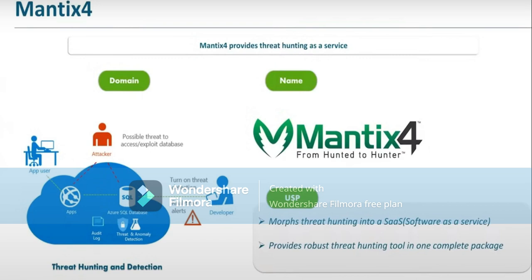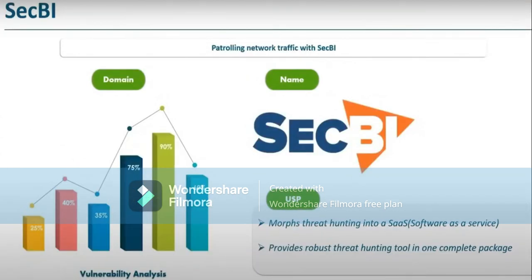We have Matis 4, which provides threat hunting as a service. When you want to find a possible threat, assess an exploit, or detect database threats, it helps you identify those threats. It involves audit logs, threat detection, and anonymity retention. Threat hunting detects possible threats in your server. It helps you morph threat hunting into a SaaS — Software as a Service — providing robust threat hunting in one complete package.